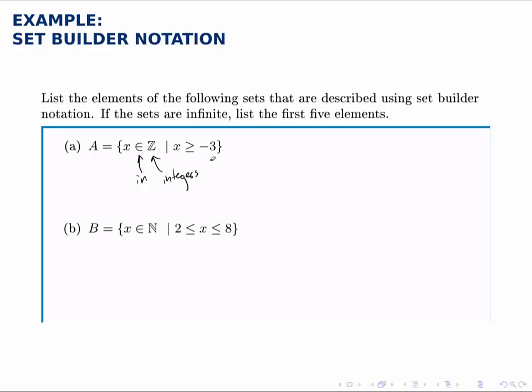So it's the set of all integers starting at negative 3 and going up. Now of course this is going to be an infinite set, because the integers never stop. So we'll list the first few elements.